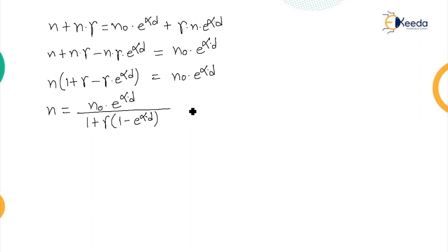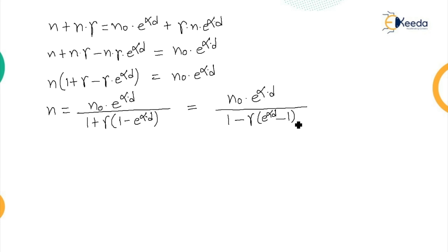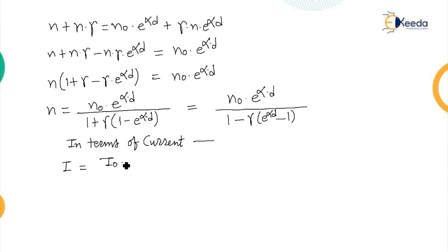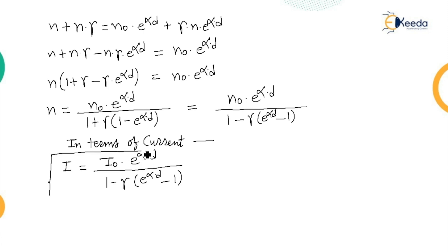Writing this equation in terms of current, we get: I = I0·e^(αd) / [1 − γ(e^(αd) − 1)]. This is the current growth equation in the presence of the secondary ionization process.